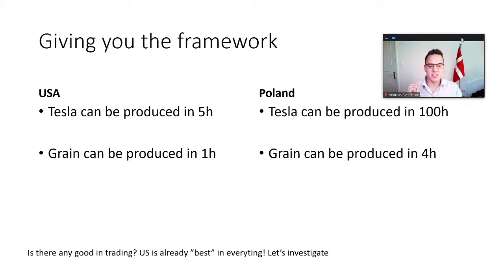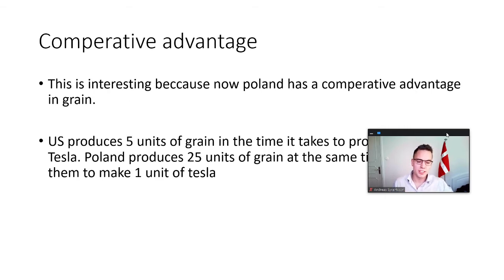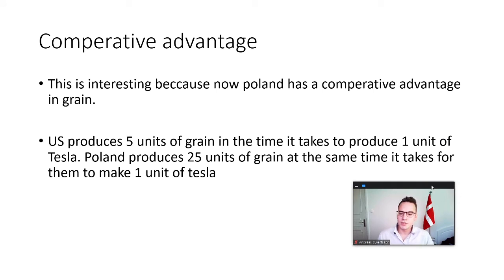So we can see that we have an industrial nation and a developing nation here. Does it even make sense to trade, because the US is more efficient at producing everything? This is called having a competitive advantage — the US is simply more efficient in production, like Germany or Japan. However, to make a case for international trade, if we look at comparative advantage rather than competitive advantage, we see that it actually makes sense for these two nations to trade.